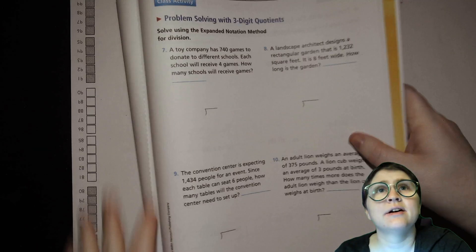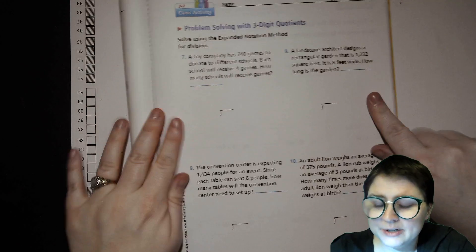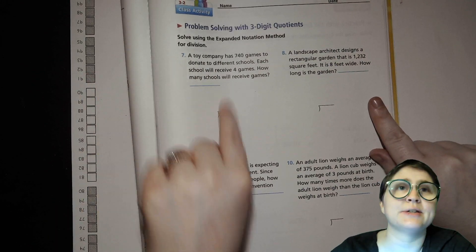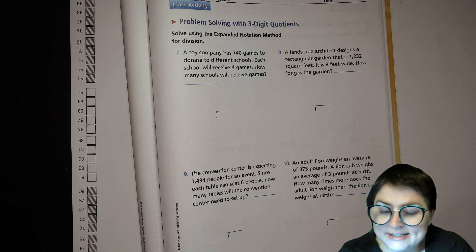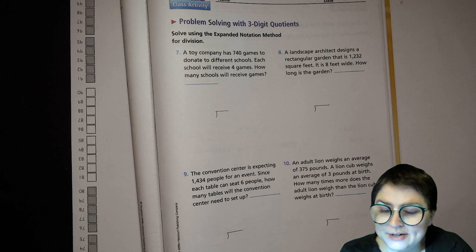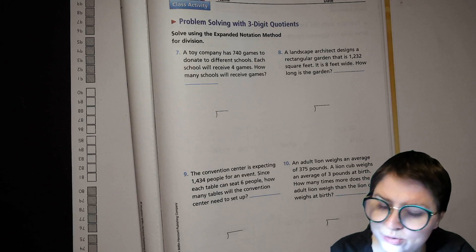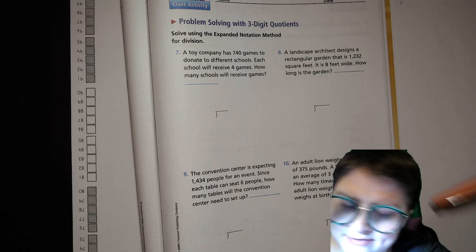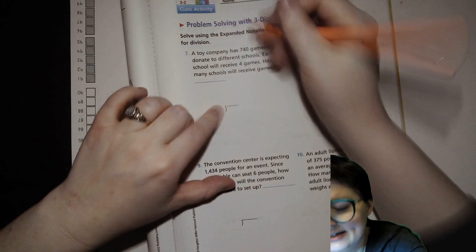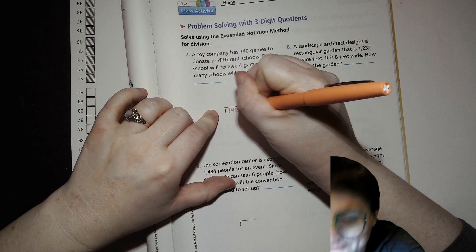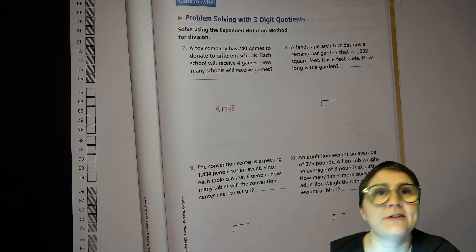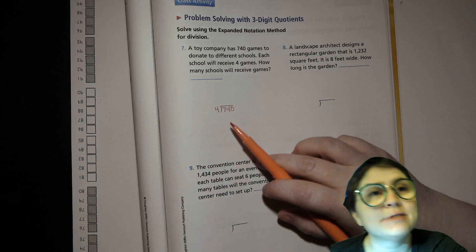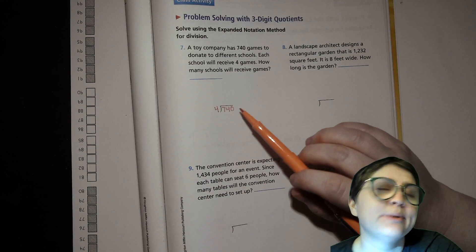Turn the page. We're on 105. We're going to use that expanded notation method, and that's why there's all this space above the division symbol. So it says here, a toy company has 740 games to donate to different schools. Each school will receive four games. How many schools will receive games? So we'll write our number that's getting divided, 740, inside the box, then we'll write four over here, and then we ask ourselves, how many hundreds do we need to multiply four by to get close to but not over 700?